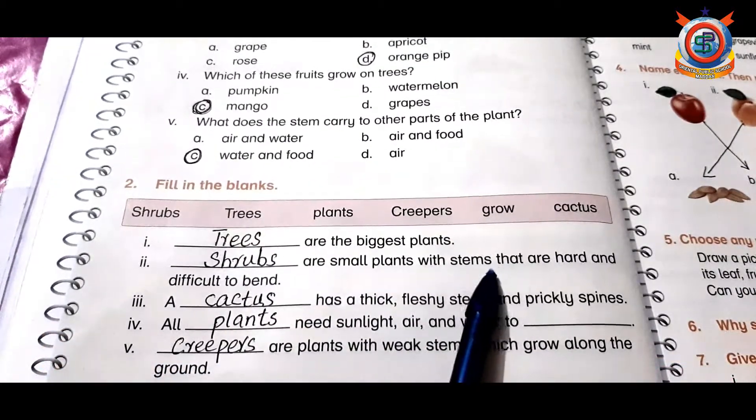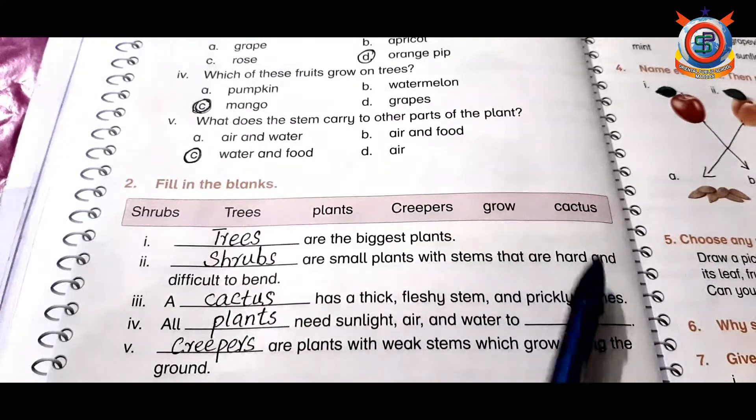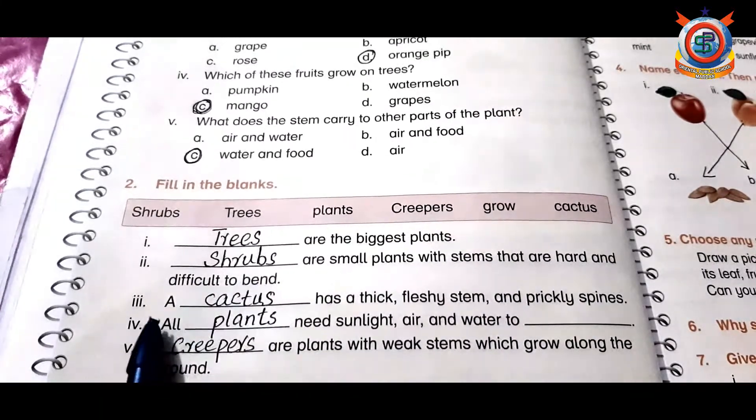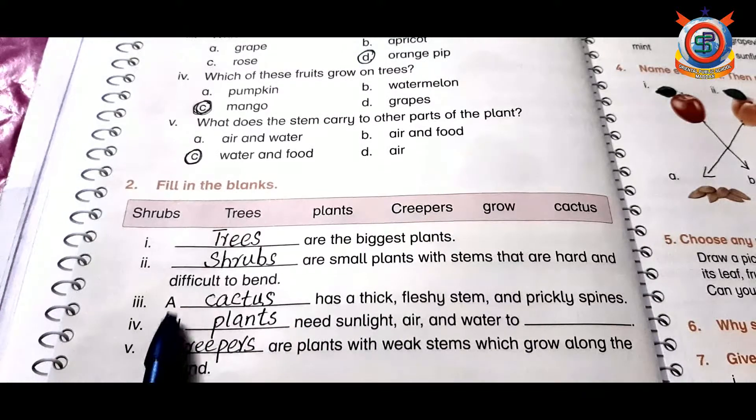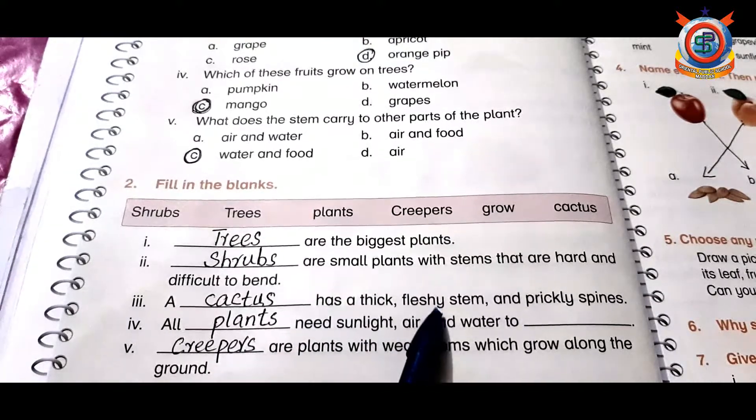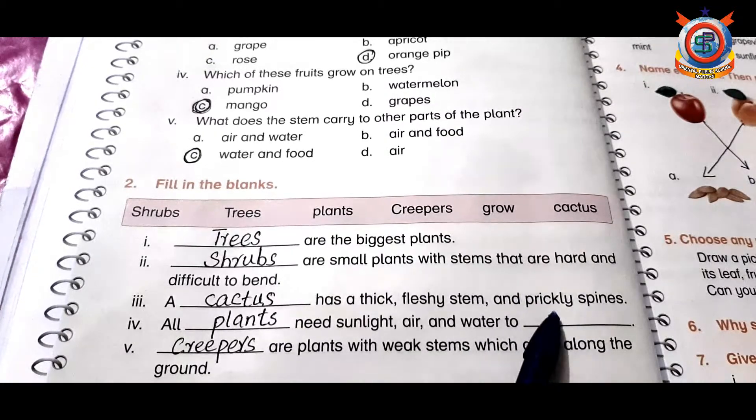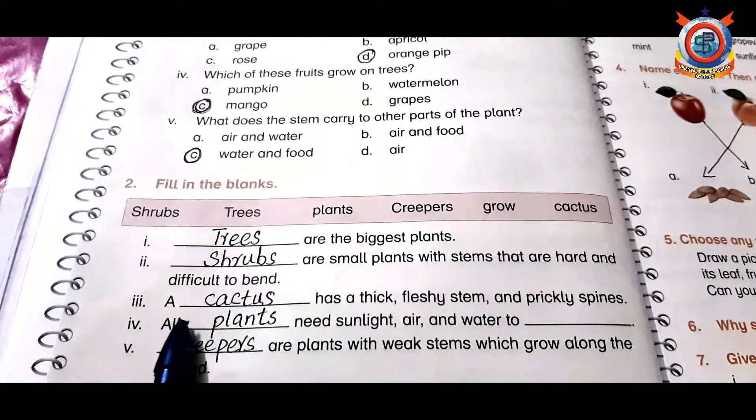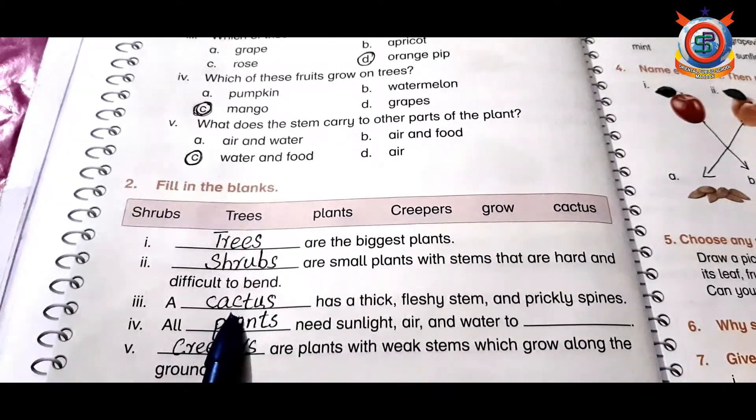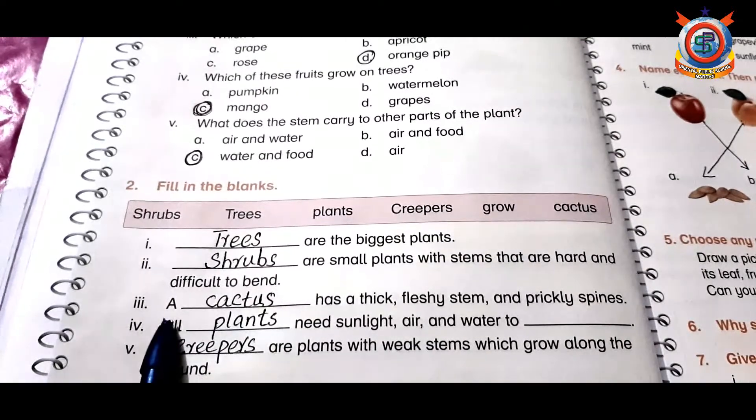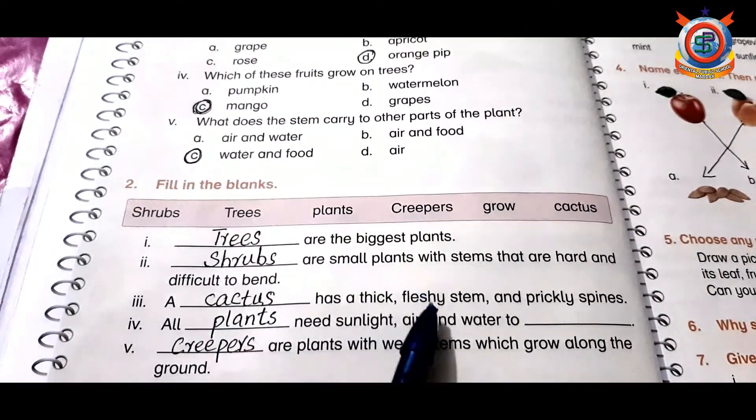Number three: a cactus has a thick fleshy stem and prickly spines. Prickly means taste nookdar. Cactus is a desert plant, so cactus has a thick fleshy stem and prickly spines.